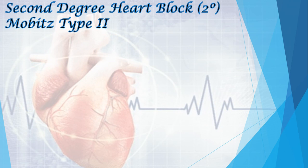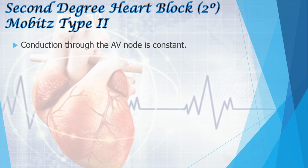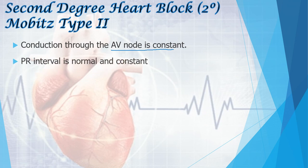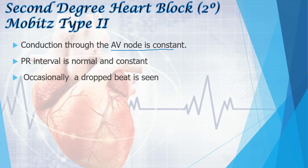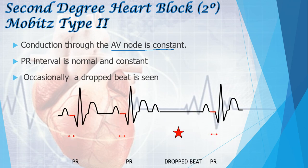In Mobitz type 2, conduction through the AV node is constant — that is the significant difference from Mobitz type 1. There is delayed AV conduction but it is constant. The PR interval is prolonged but constant across beats. Occasionally, a dropped beat is seen. On the ECG, the PR interval is similarly constant throughout the rhythm, but there is a dropped beat.